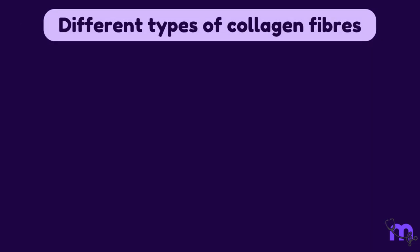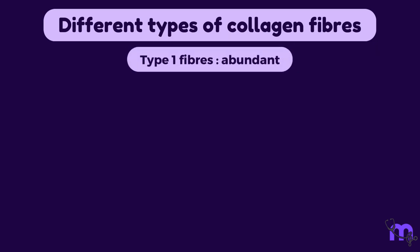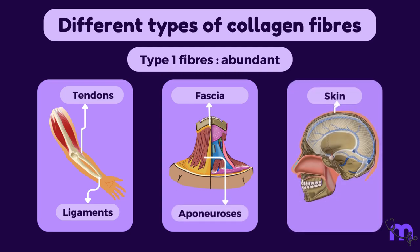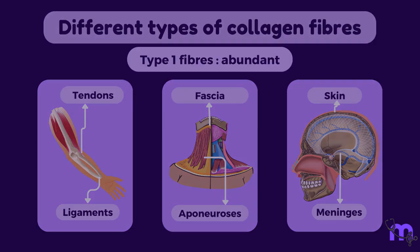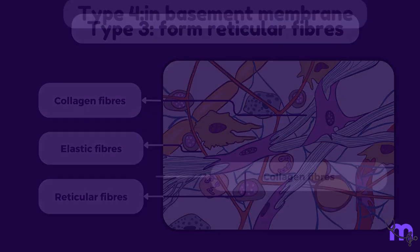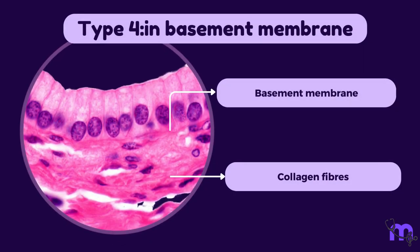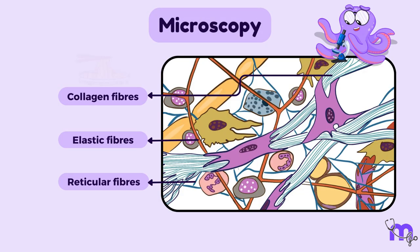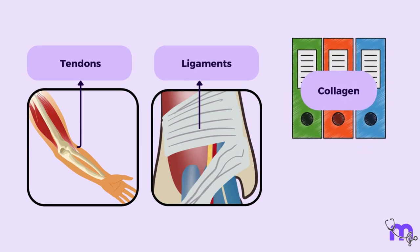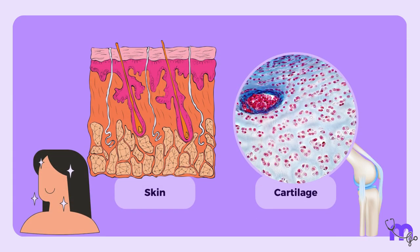There are different types of collagen fibers. Type 1 fibers are the most abundant and are found in tendons, ligaments, fascia, aponeuroses, skin, and meninges. Type 2 fibers are mainly seen in cartilage. Type 3 fibers form reticular fibers. Type 4 fibers are found in the basement membrane. Under the microscope, collagen fibers appear as long, thin, wavy fibers oriented in various directions depending on the tissue type. In tendons and ligaments, collagen fibers are highly organized and parallel, giving these tissues their strength and flexibility. In other tissues such as skin and cartilage, collagen fibers are arranged in a more random pattern.